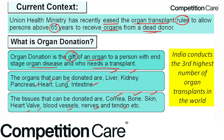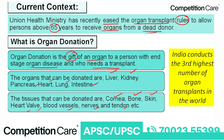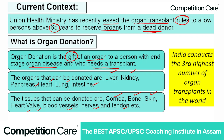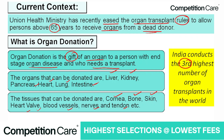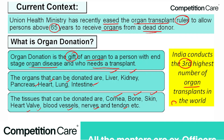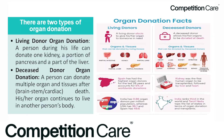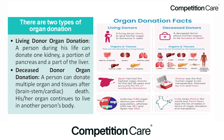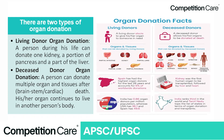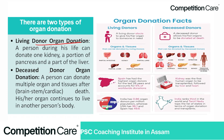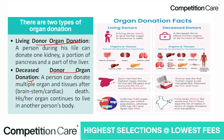India ranks third highest in the number of organ transplants in the world. There are basically two types of organ donation: living donor organ donation and deceased donor organ donation.